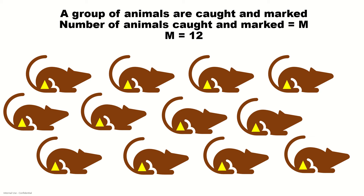A group of individuals are captured from the population and marked in such a way so that they can be recognized when released back into the population. Here we are considering the population of rats or mice. These animals are comparatively smaller and they are mobile — they will not rest in one place. A group of animals are captured and marked, and the marking should be such that they can be recognized when released back into the population.